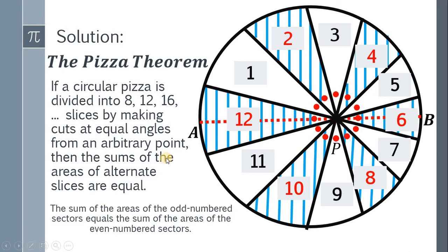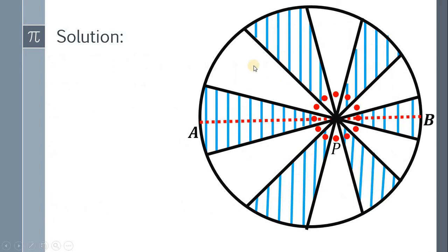Now since we proved the Pizza Theorem, we can use this theorem to answer our problem. We know that the area of the shaded region is half of the area of this circle.